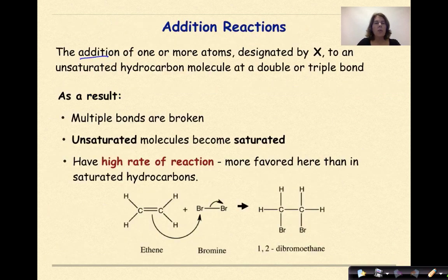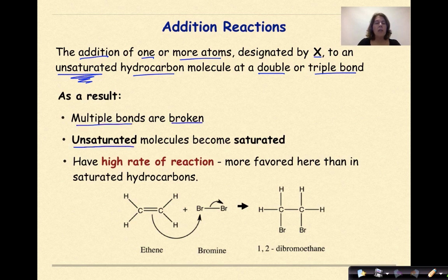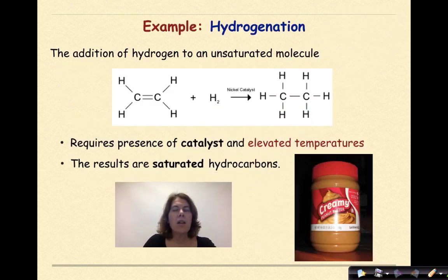Now let's talk about addition reactions. The addition of one or more atoms, designated by X, to an unsaturated hydrocarbon, which is a big difference from our substitution reactions, at a double or triple bond. As a result, multiple bonds are broken, unsaturated molecules become saturated, and they have a high rate of reaction, more favored here than in saturated hydrocarbons. Here's an example: hydrogenation, the addition of hydrogen to an unsaturated molecule. This requires the presence of a catalyst and elevated temperatures. The results are saturated hydrocarbons.